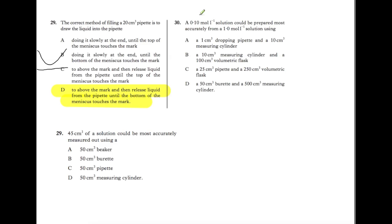The second question here, we would like to make a 0.1 molar solution from a 1 molar solution. So which is the most accurate way to do it? You could take a 1 cm³ dropping pipette and a 10 cm³ measuring cylinder. Measuring cylinders are not very accurate so that wouldn't be a good way to go.